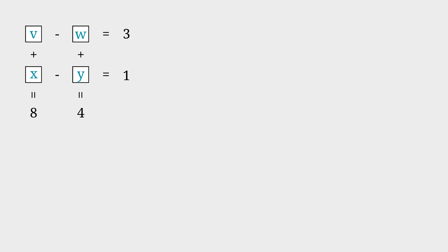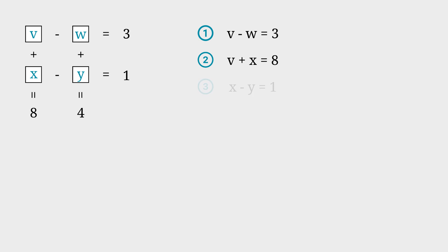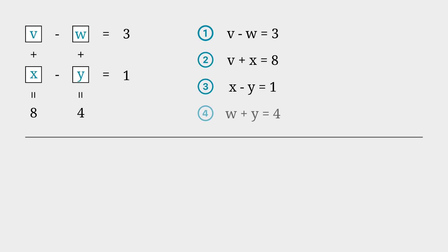We can label our first equation as V minus W is equal to 3, our second equation as V plus X is equal to 8, the third equation is X minus Y is 1, and our fourth equation is W plus Y is equal to 4.